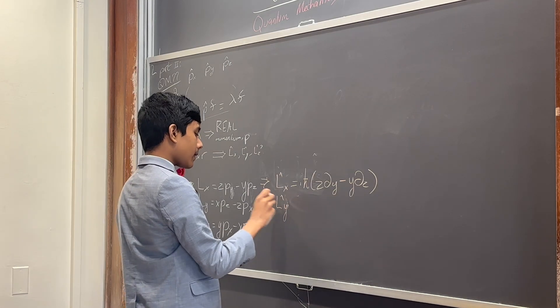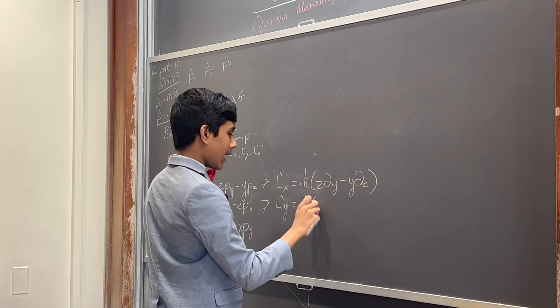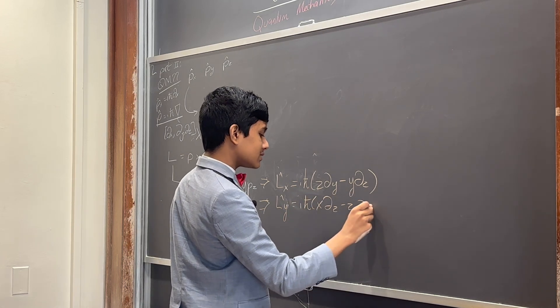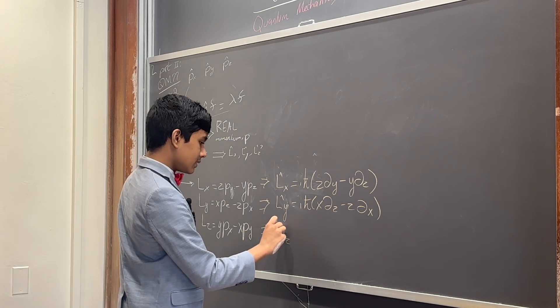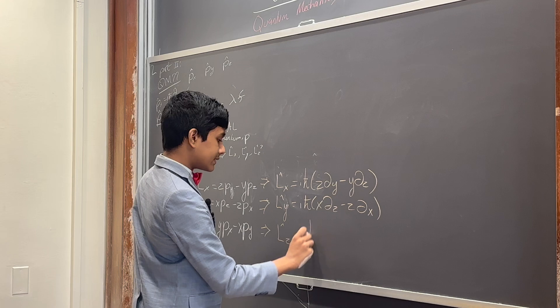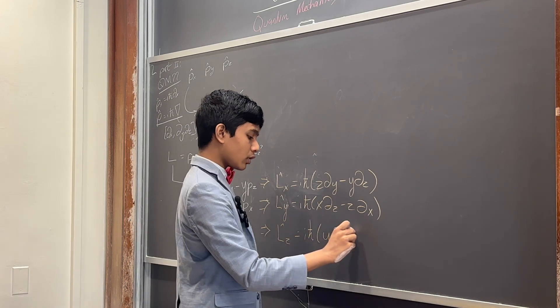Ly is going to be i h bar times x partial z minus z partial x. Lz is going to be i h bar times y partial x minus x partial y.